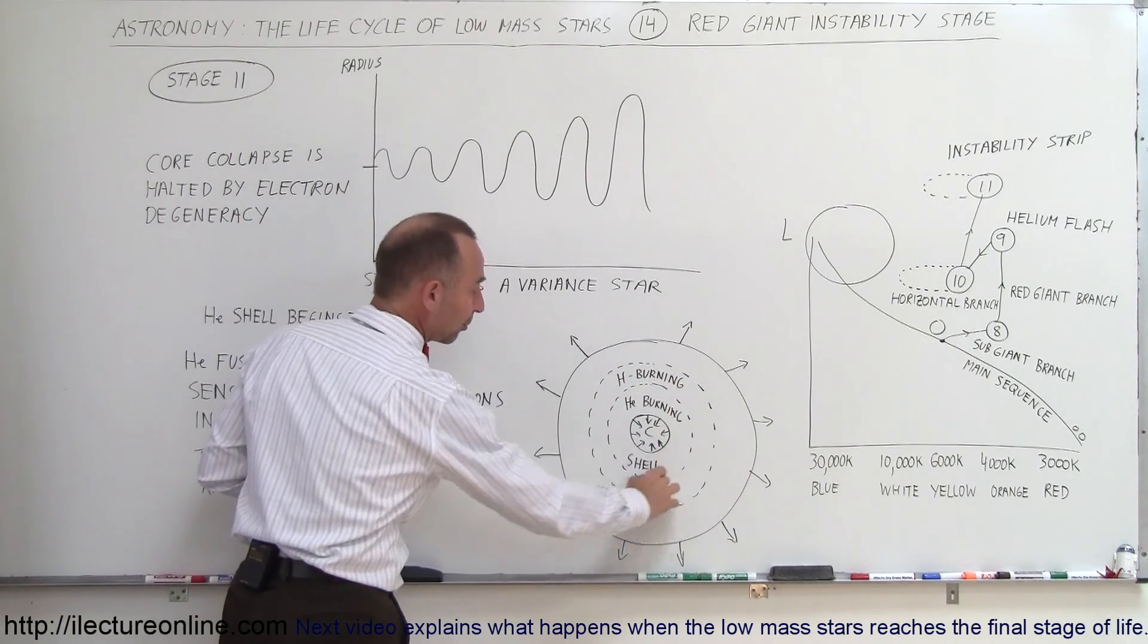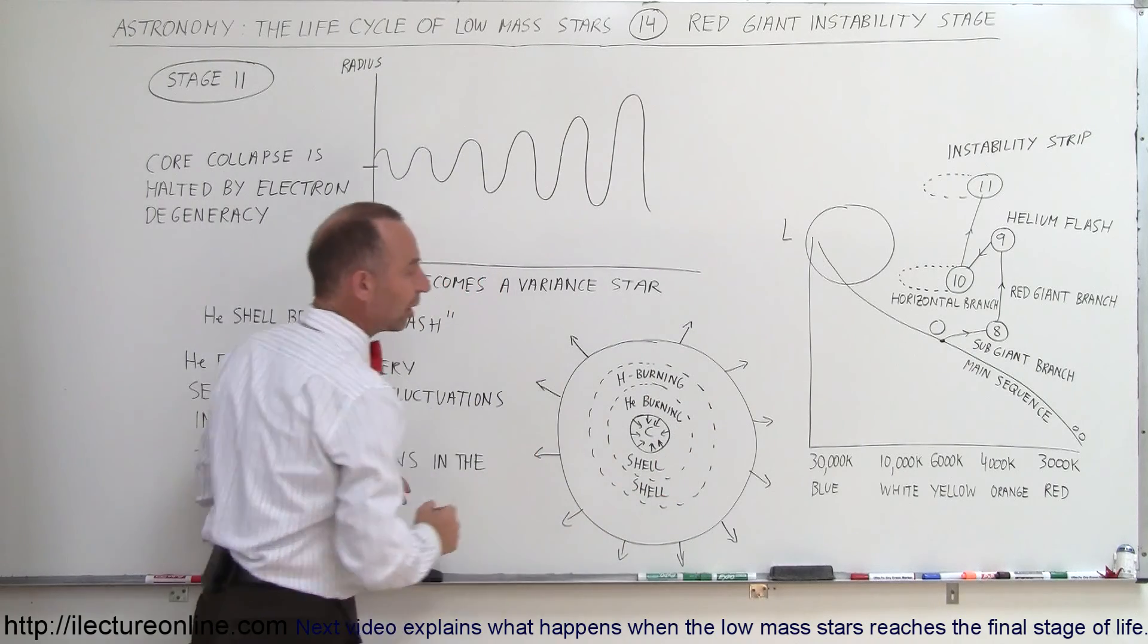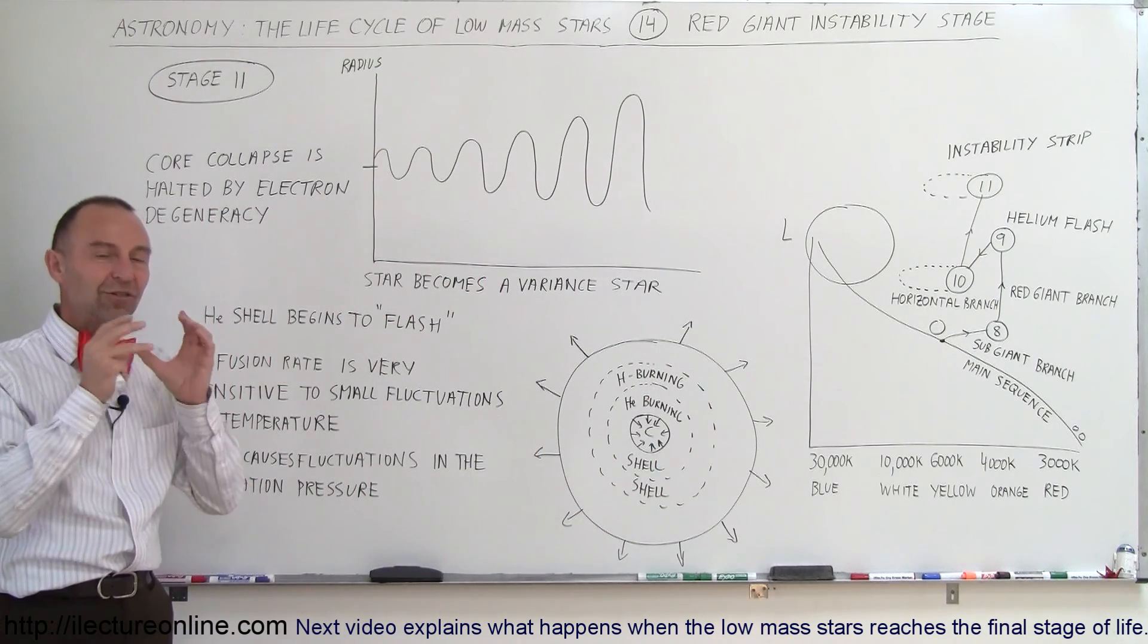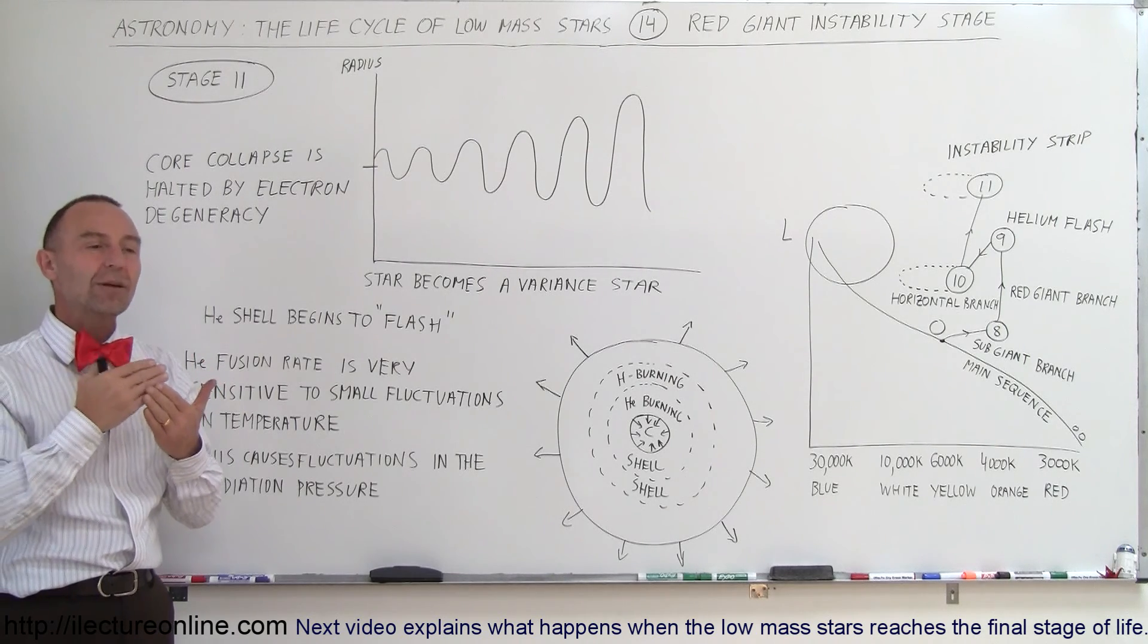around the core we have the helium burning shell and the hydrogen burning shell. The helium burning shell is very sensitive to very small fluctuations in temperature.